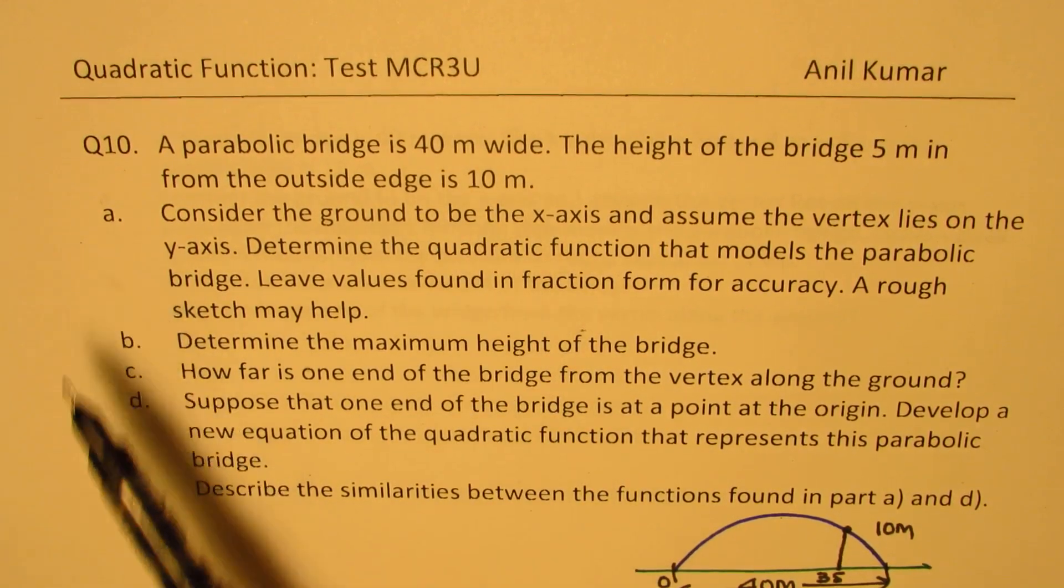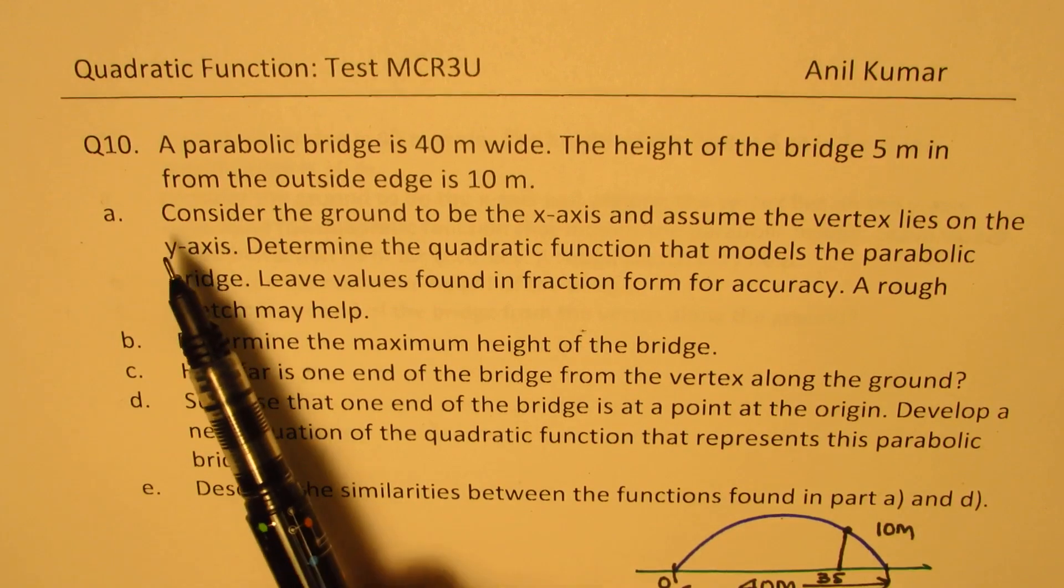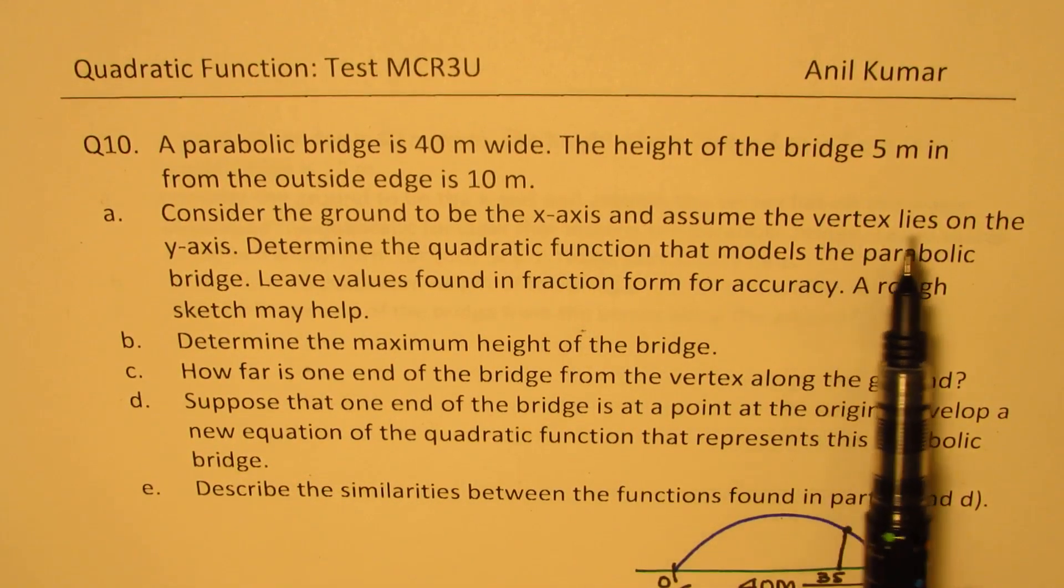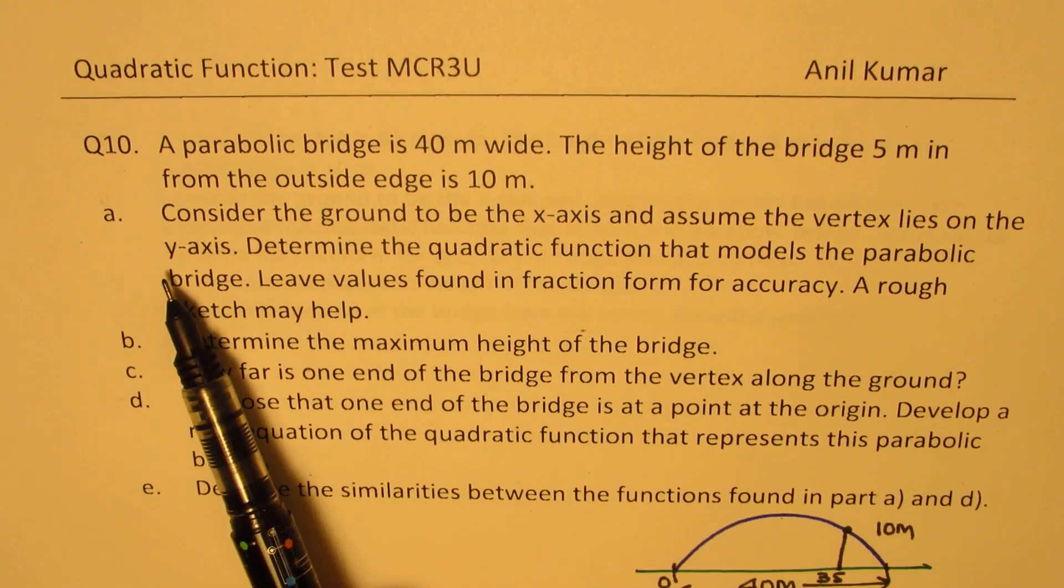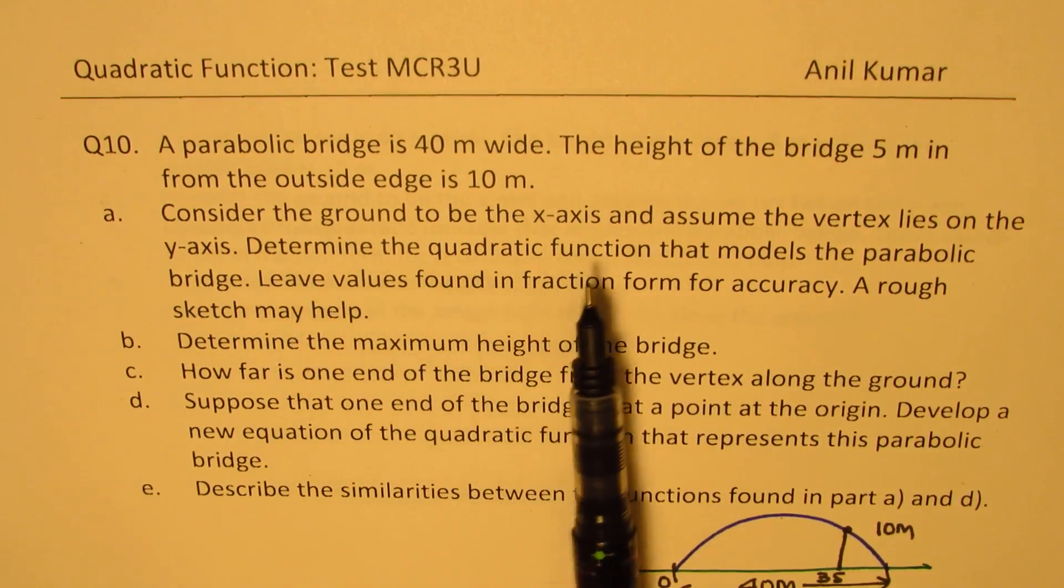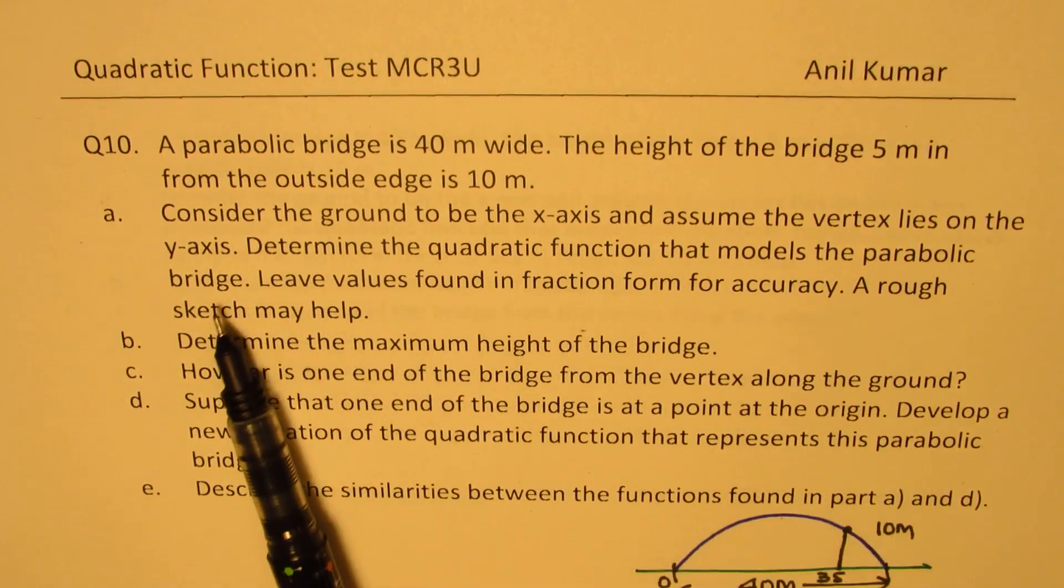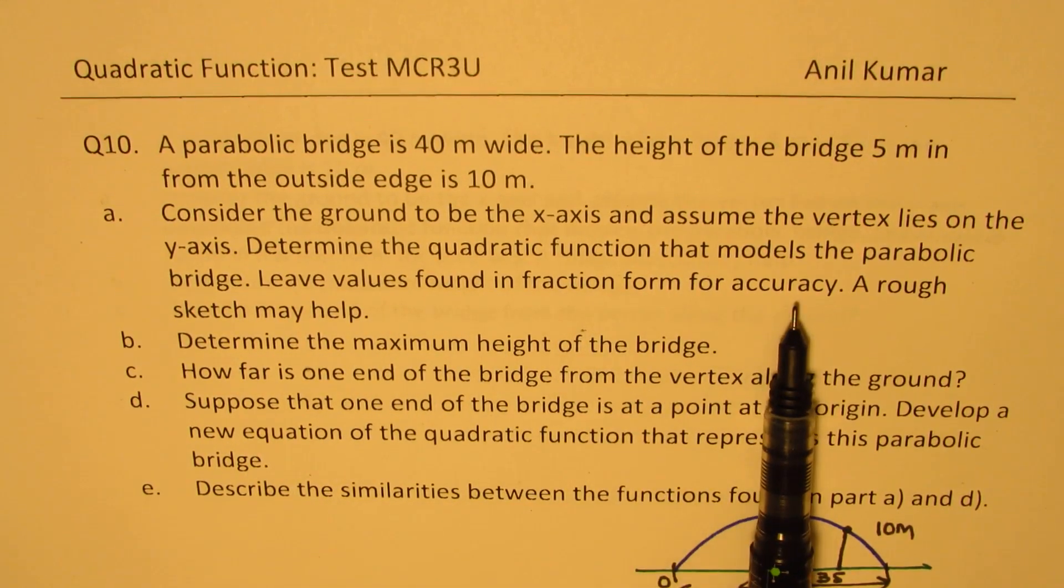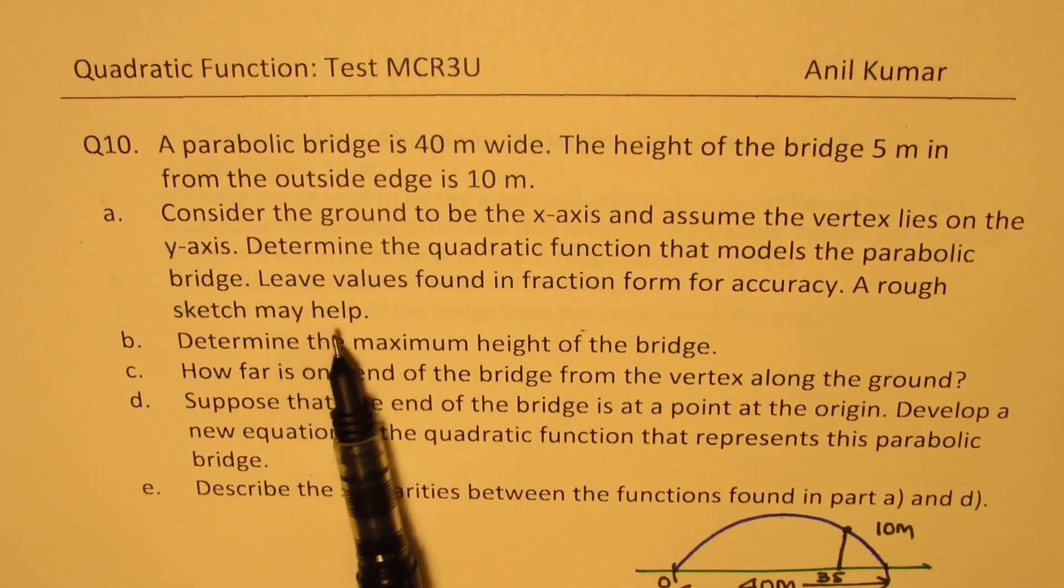Now based on this we have five questions. Consider the ground to be the x-axis and assume the vertex lies on the y-axis. So the vertex lies on the y-axis means this is your y-axis. Determine the quadratic function that models the parabolic bridge. Leave values found in fraction form for accuracy. A rough sketch may help.